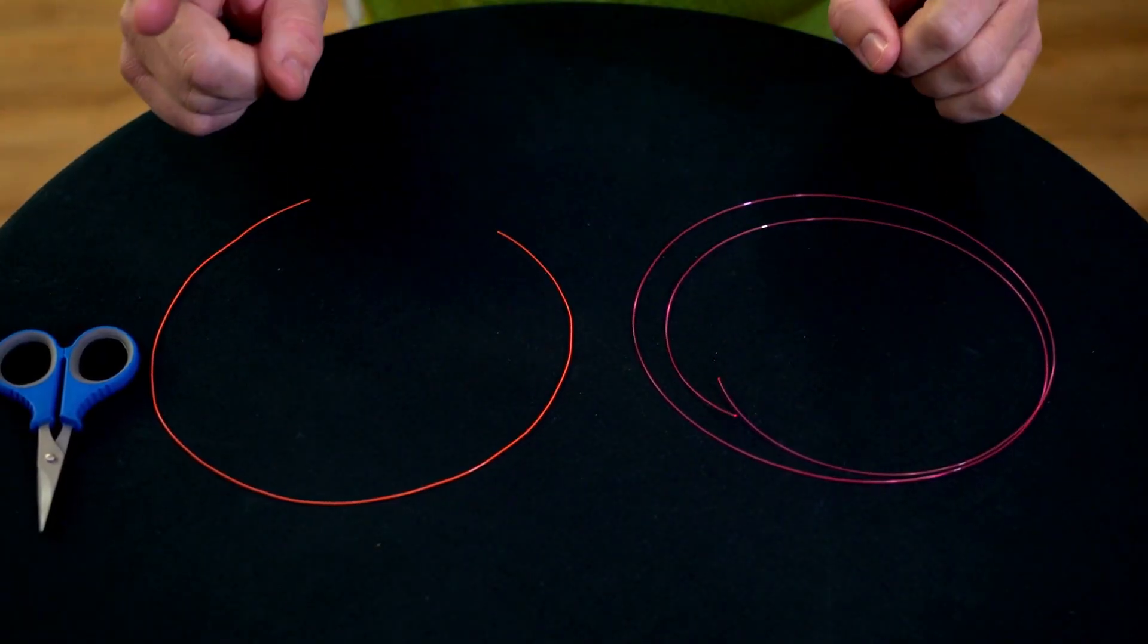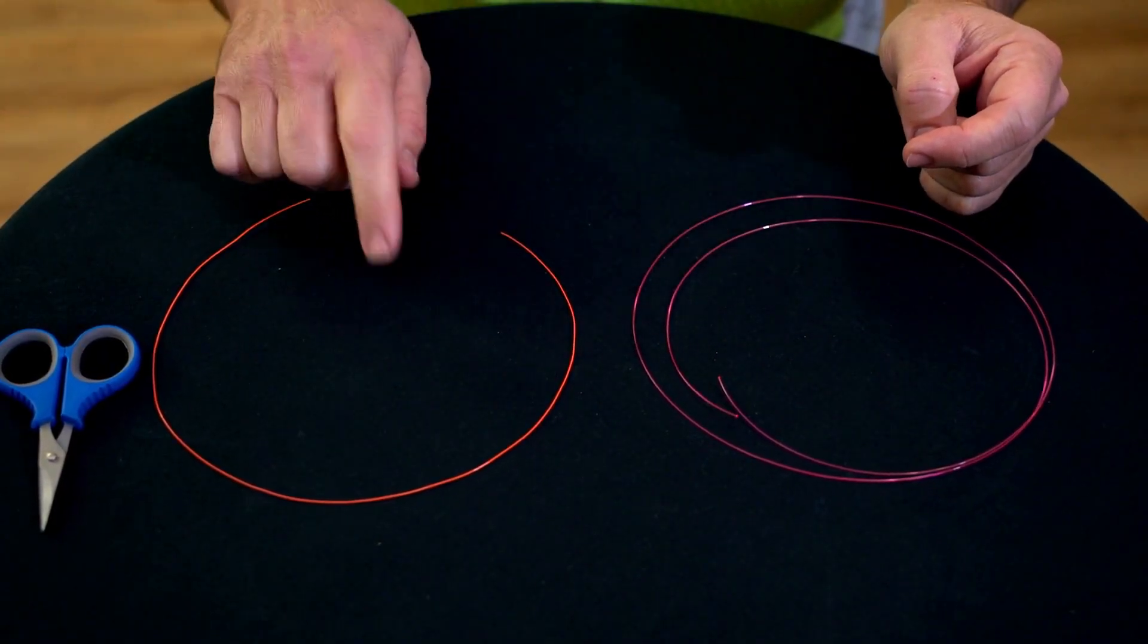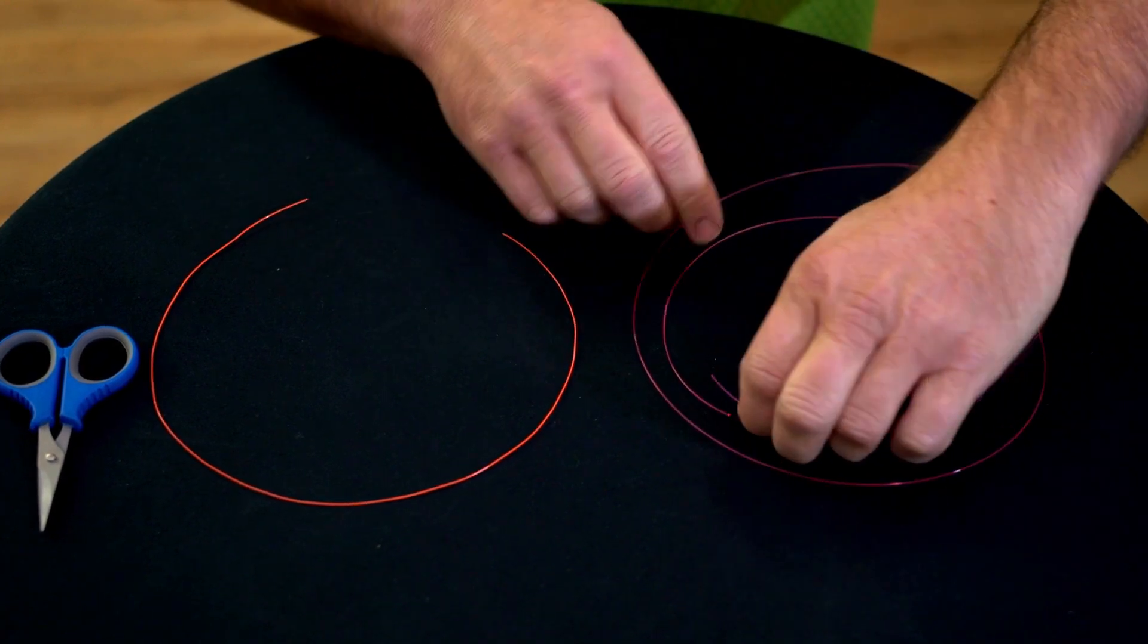So everybody ties their Paternoster differently, but with mine I start with a long piece of mono and a short piece. I've used different colors so you can quite easily see what I'm up to.